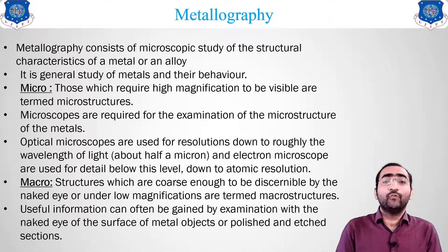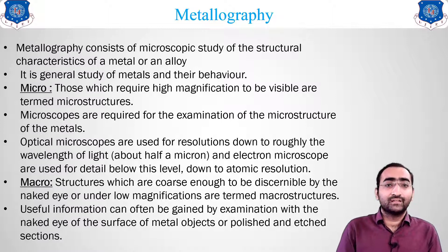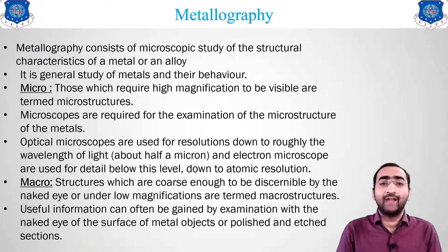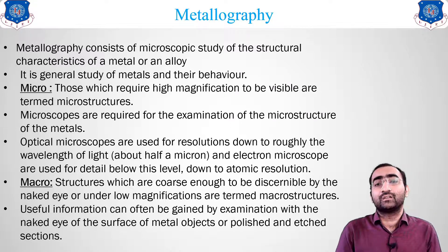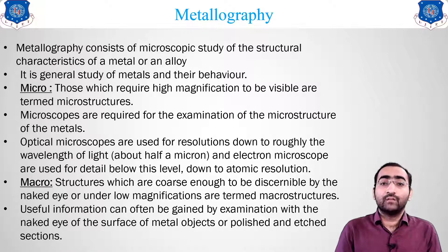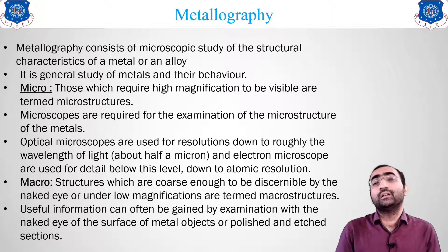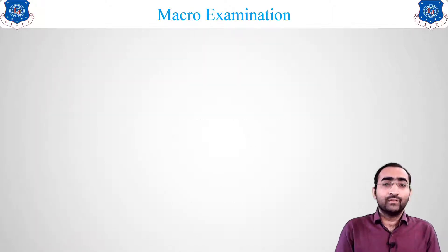Macro examination is useful for getting information about surface disintegration, shape changes, dents, or scratches which are there on the surface. Basically, metallography deals with the structure — how we can observe the structure — and for that observation there are two types: micro examination and macro examination.